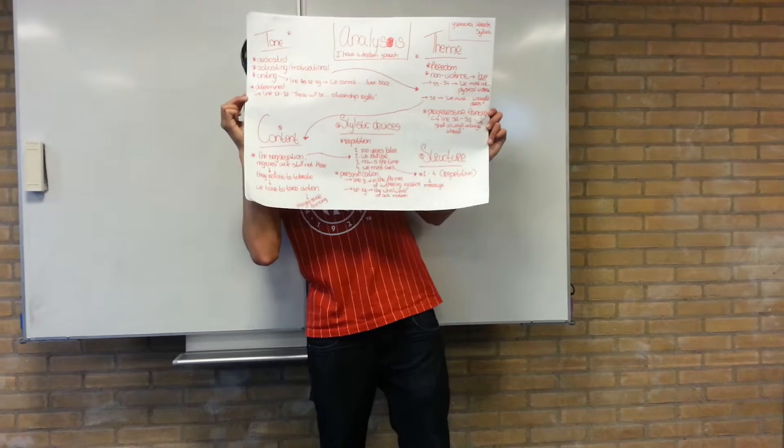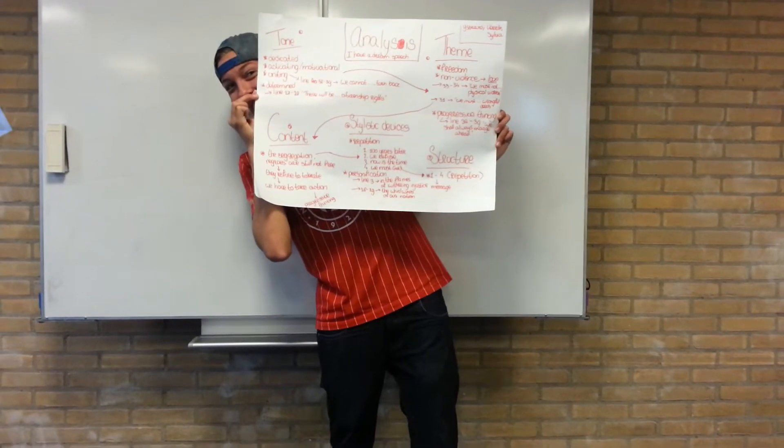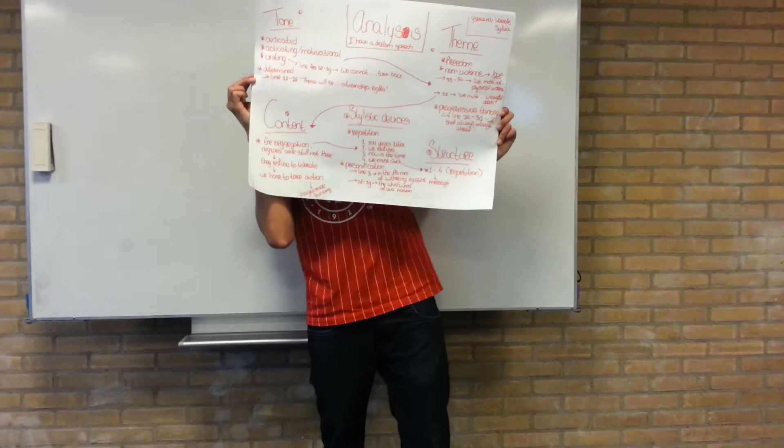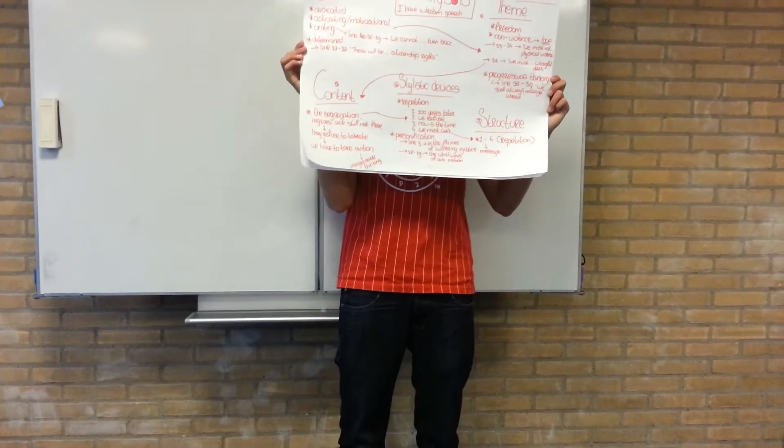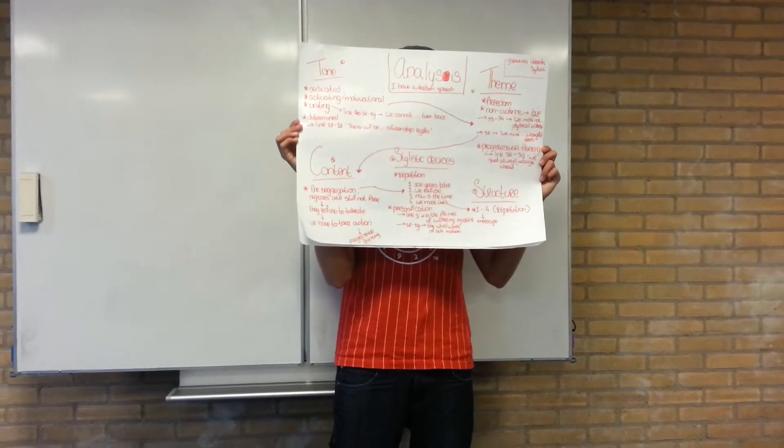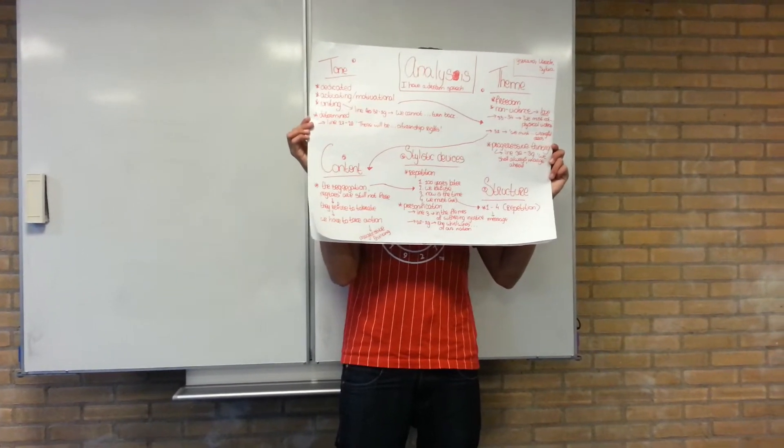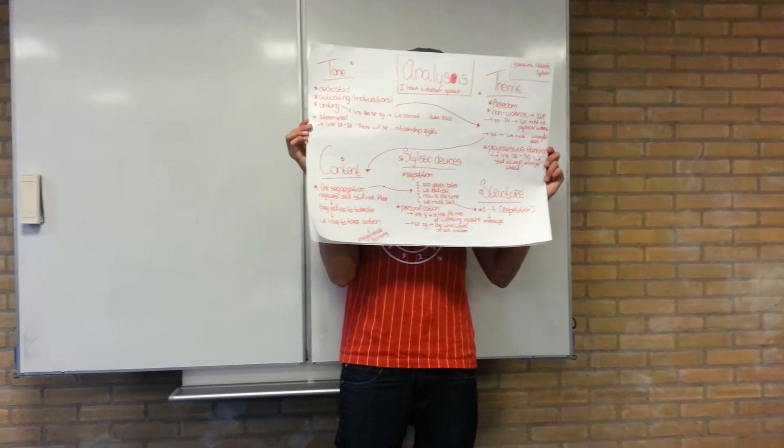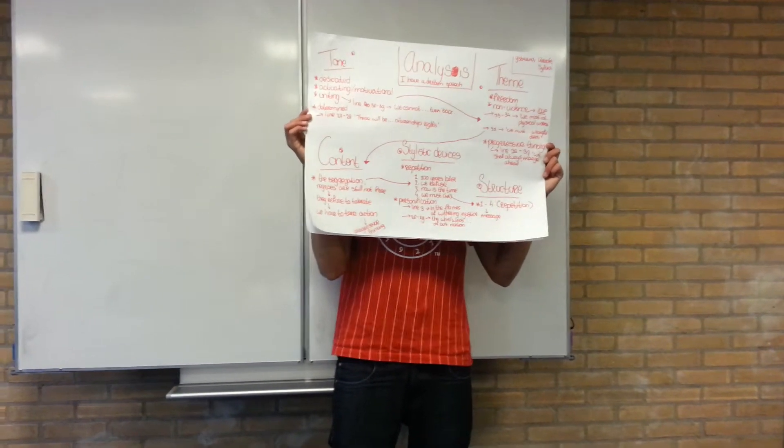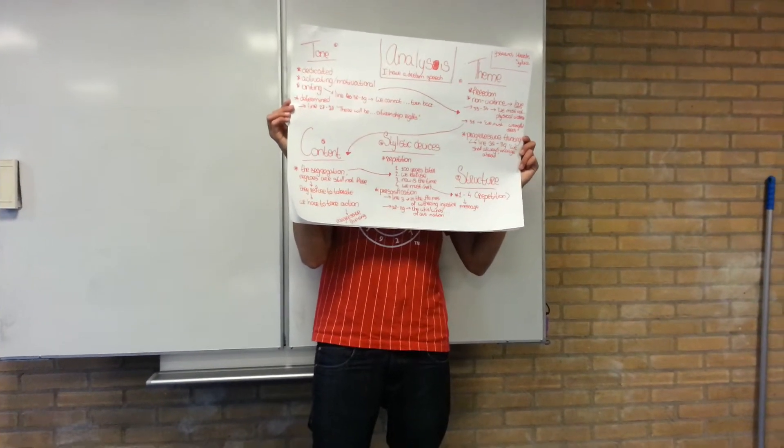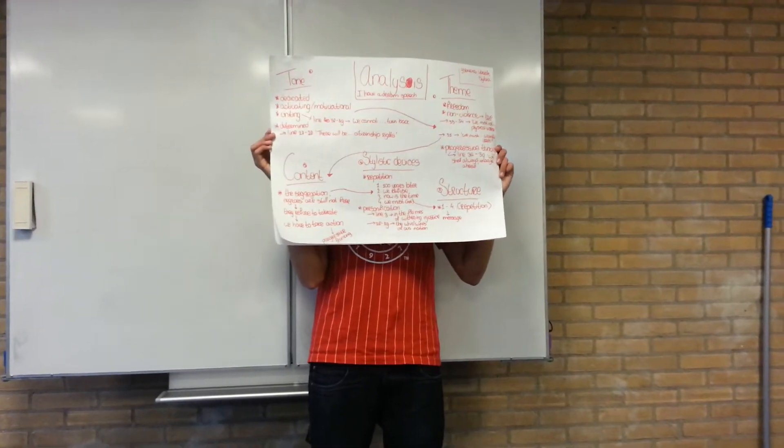I'm going to make a quick link to the structure and the stylistic devices because in the stylistic devices there are, in this extract, there are four repetitions. And these four repetitions basically sum up the content of this part of the speech. Repetition one is 100 years later. Repetition two is we refuse. Then repetition three, now is the time. And repetition four, we must not. And basically this explains the content as in 100 years later in America there is still segregation, Negroes are still being treated very badly. We refuse to accept this, now is the time to take action, and we must not be guilty of violence.